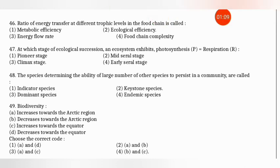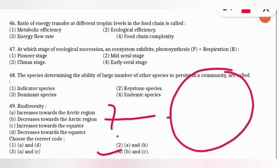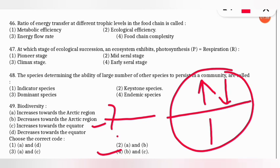The next question: biodiversity increases or decreases according to which option? The correct option is option 4 — both B and C are correct. Biodiversity decreases toward the Arctic region (poles), and it increases toward the equator. As we move from either pole toward the equator, biodiversity increases.